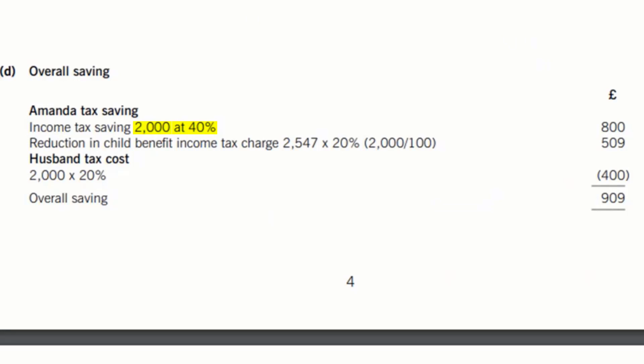Add to that the savings in the child benefit income tax charge because now she has £2000 less income. Given that the child benefit income tax charge is at the rate of 1% per 100 pounds on income exceeding £50,000 the percentage reduction was 20% that is £2000 divided by 100.